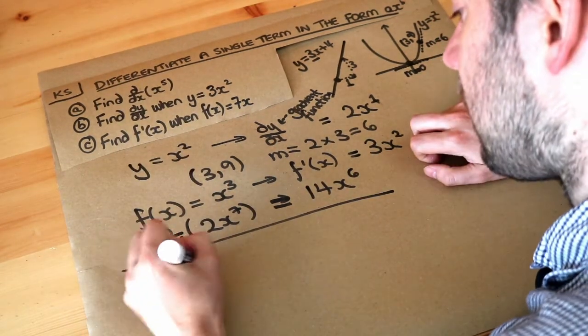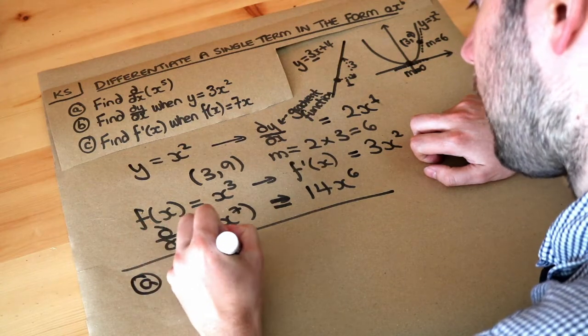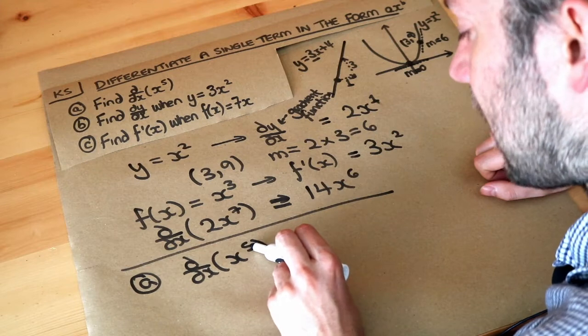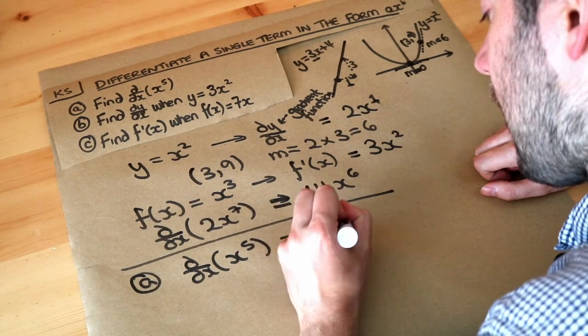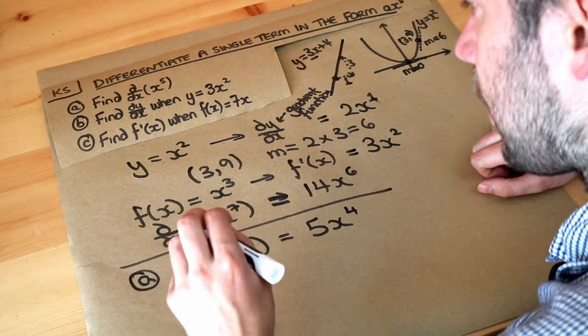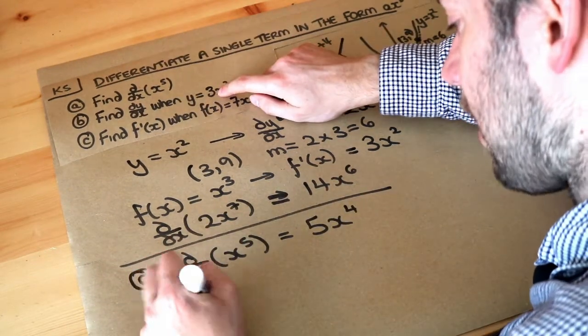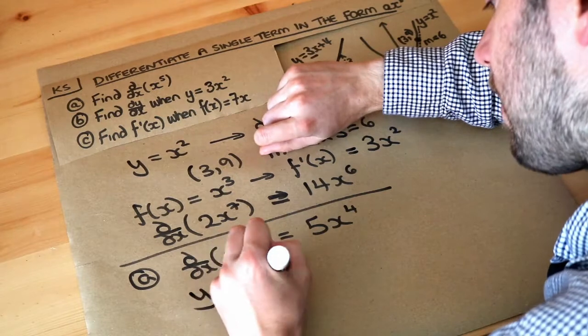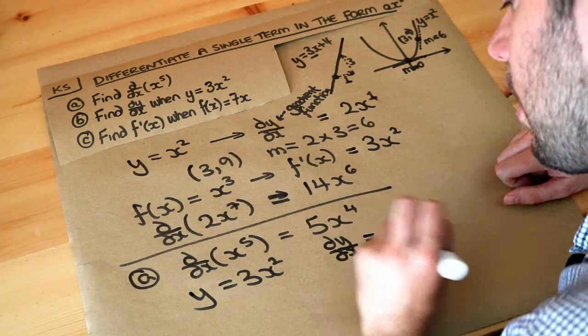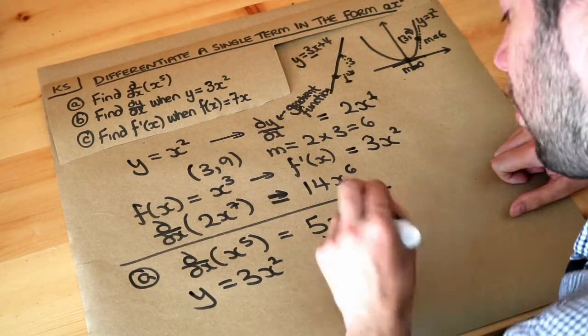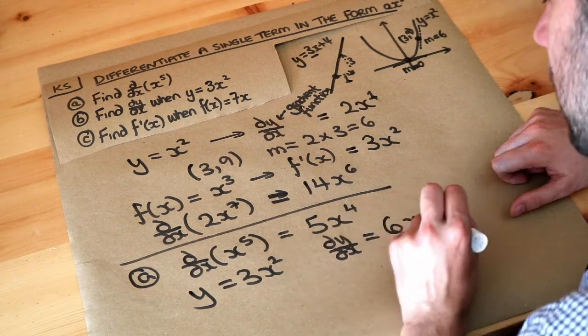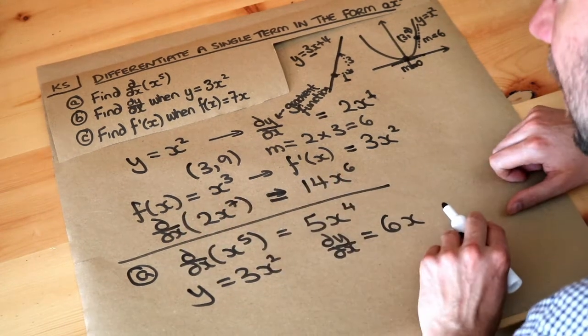So let's do it for these actual examples here. We want to find d over dx of X to the 5. We just multiply by the power of the index, so we times by 5, and then that index of 5 gets reduced by 1. Now, if Y is equal to 3X squared, then dy over dx, the gradient function, we multiply the 3 by the 2, becomes 6, and then reduce that power by 1. So 2 becomes 1, or X to 1 is just X.